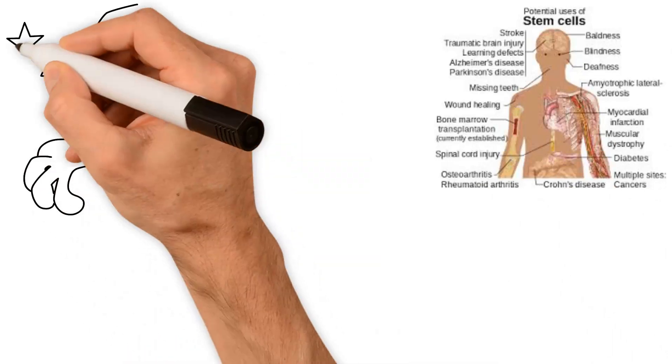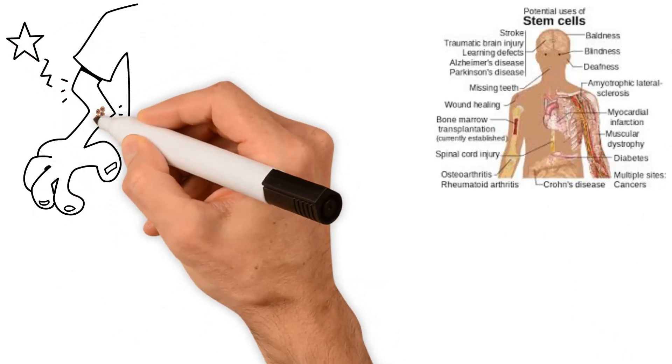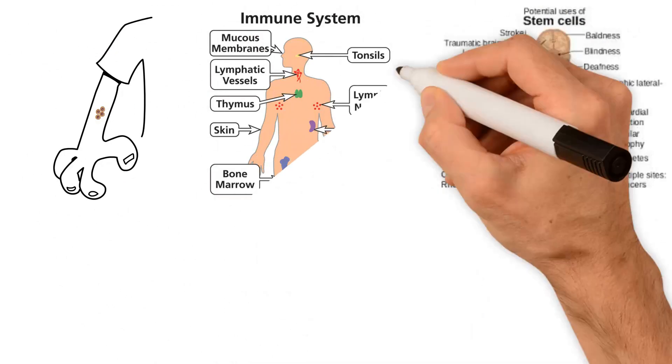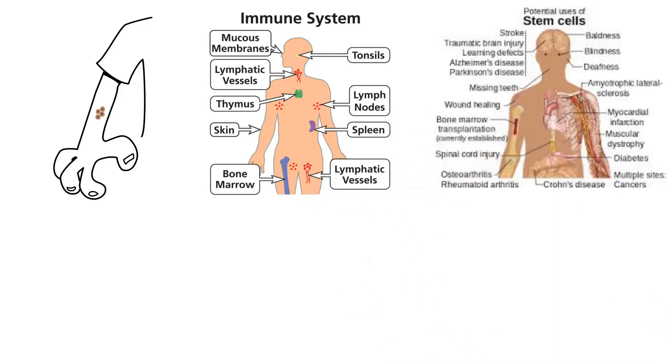When the body is injured, stem cells at the injured location differentiate into the desired cell, which repairs the affected area. Stem cells also keep our bodies healthy by resupplying the immune system.